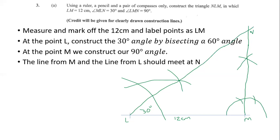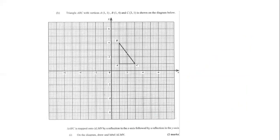Part b introduces triangle ABC with vertices A(1,1), B(1,4), and C(3,1) shown on a diagram. It states that triangle ABC is mapped onto triangle LMN by a reflection in the x-axis followed by a reflection in the y-axis, and asks us to draw and label triangle LMN on the diagram.